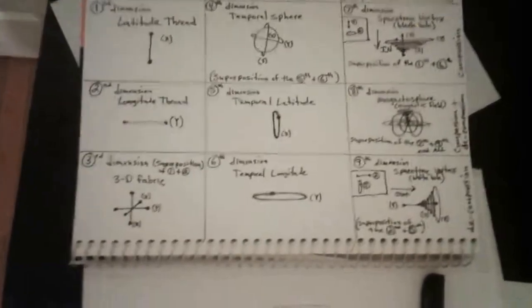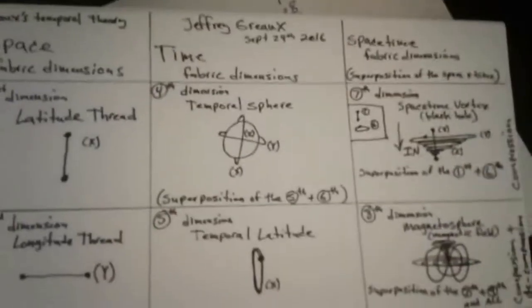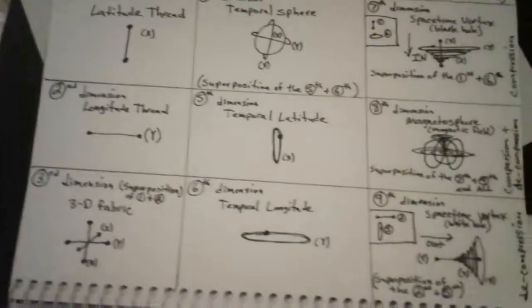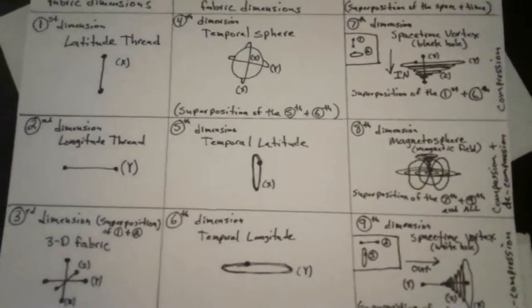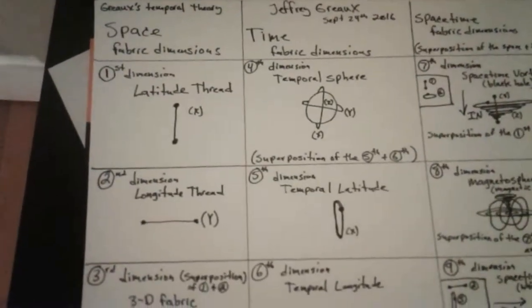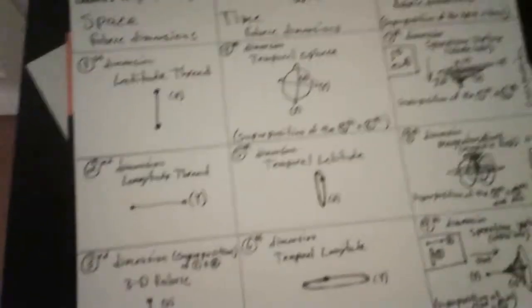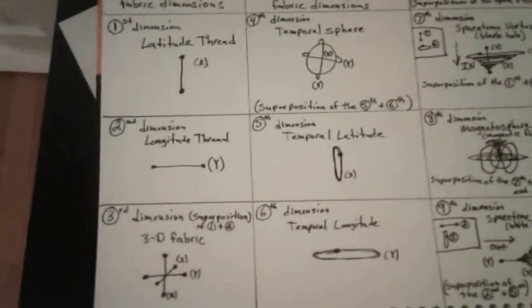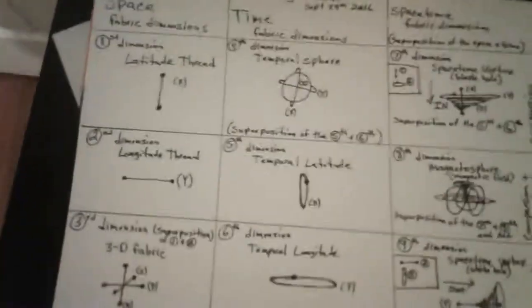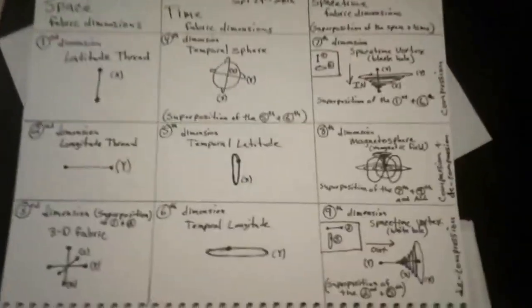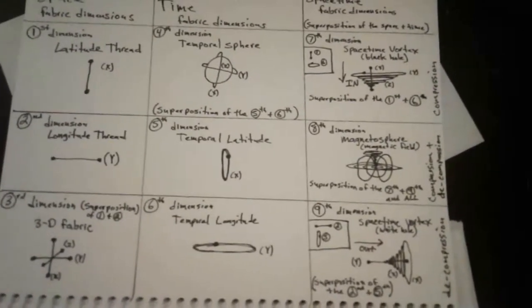Figuring out the eighth dimension took me two days. I had to figure out what the superposition was between the seventh and the ninth dimension. You have space-time compression and space-time decompression. In the eighth dimension you would have both space-time compression and decompression — decompression coming out the bottom, then compression going back into the top, then going in again.